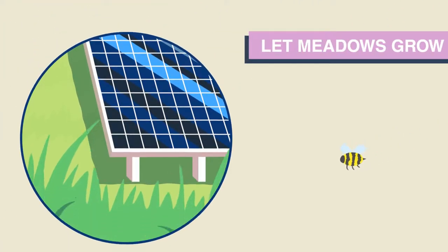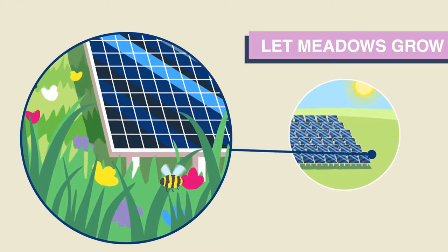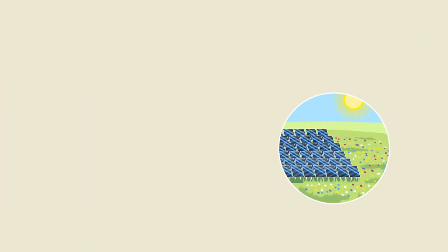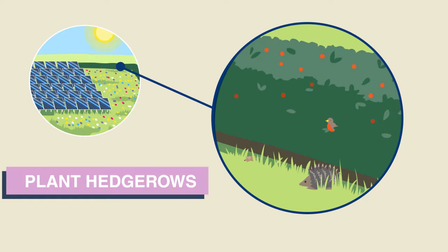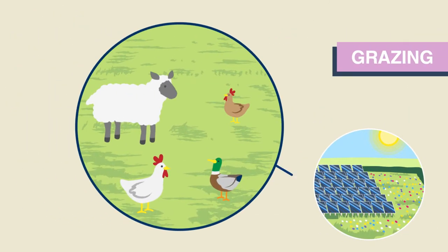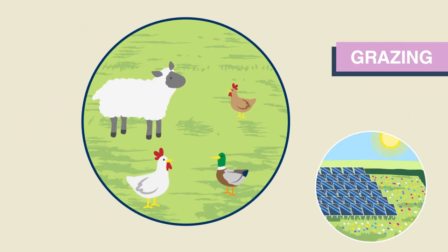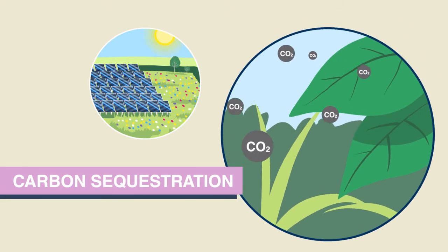Allowing meadows to grow will encourage bees and pollination. Planting hedgerows will provide habitats for wildlife and promote biodiversity. The land can also be used for grazing and help to remove carbon from the atmosphere.